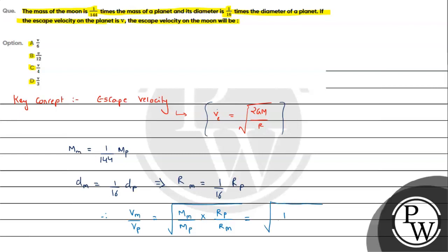Just plug in the values here: Mm by Mp equals 1 by 144, into rp by rm will be 16. 16 nines are 144, so when we solve this,